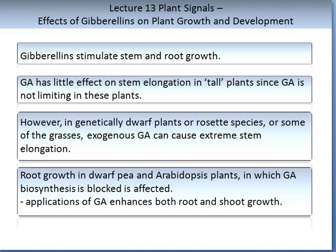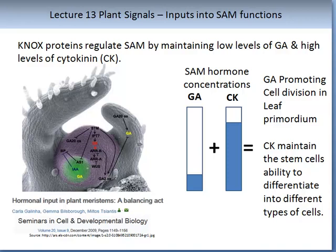SAM is short for shoot apical meristem. In the SAM, NOX proteins regulate growth by maintaining low levels of GA and high levels of cytokinin. The figure on your screen, from the paper 'Hormonal Input and Plant Mechanism: a Balancing Act' in Cell and Developmental Biology, illustrates the pathways. You do not have to learn the pathway, other than to note that SAM hormone concentrations result in different outcomes. For example, low GA promotes cell division in the leaf primordia, while high concentrations of cytokinin maintain the stem cells' ability to differentiate into different types of cells.